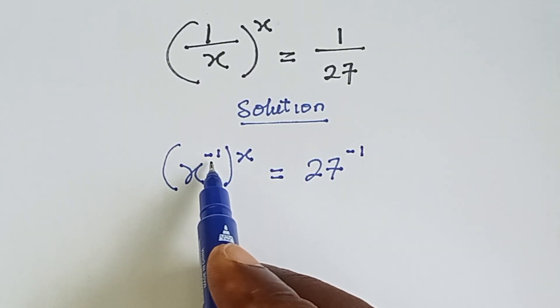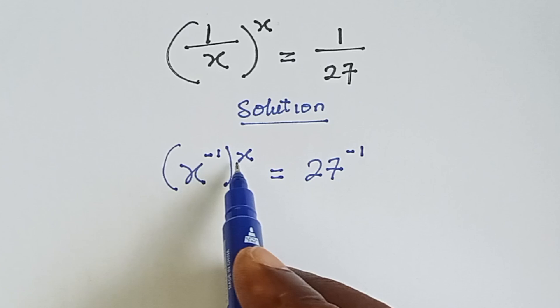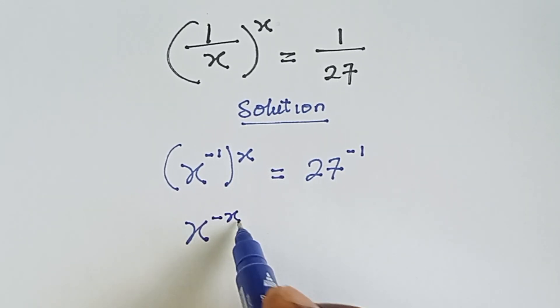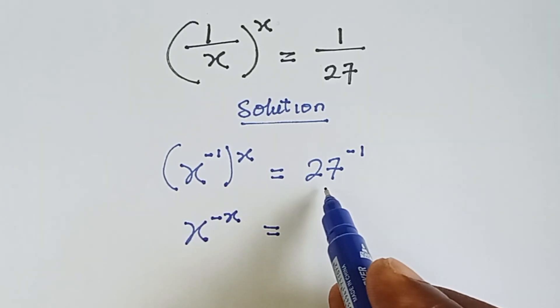Now we can multiply this minus 1 by x. So we have x raised to the power minus x equals 27 raised to the power minus 1.